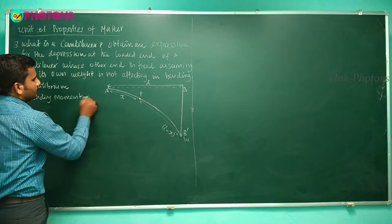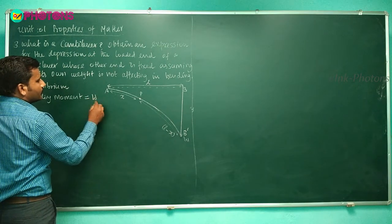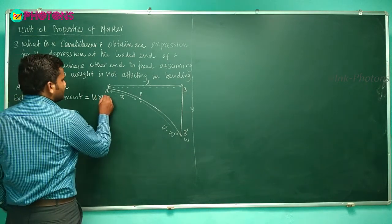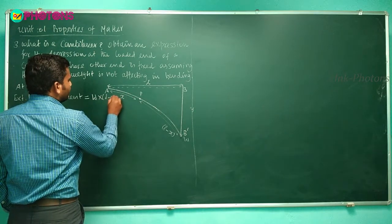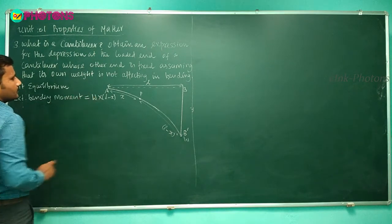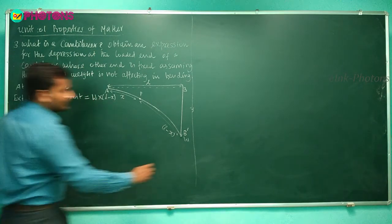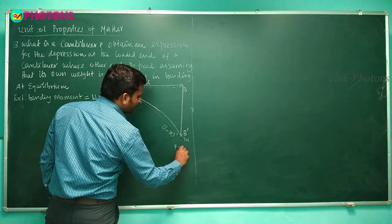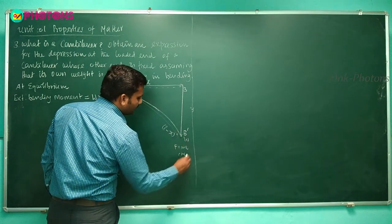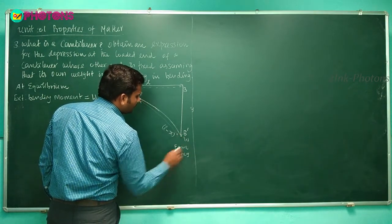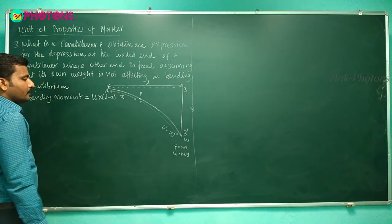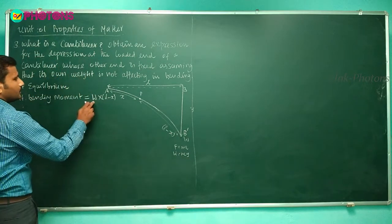We can write the external bending moment as W times (l minus x), where W is the weight — that is, W equals mg. This equals the internal bending moment, which is YI divided by R, where Y is Young's modulus, I is the moment of inertia, and R is the radius of curvature. This gives us Equation 1: W(l − x) = YI/R.